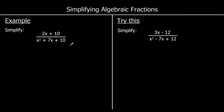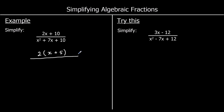So for the top, we've got 2x plus 10. We can take 2 out of this — it's a single bracket, 2 on the outside. 2 times x makes 2x, and 2 times 5 makes 10. So we've got 2(x plus 5) on the top.